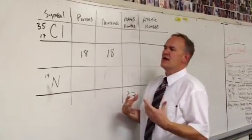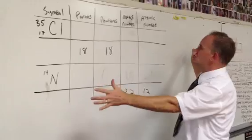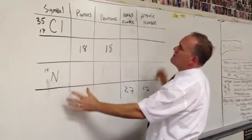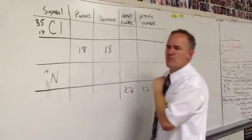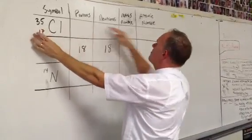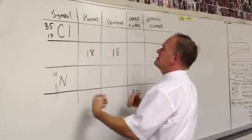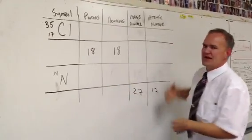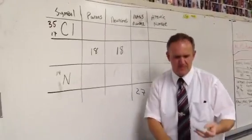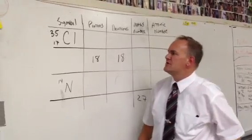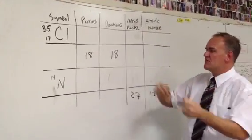Today's homework is going to involve something like this. We're going to have a big long chart, and the chart is going to have all this stuff on it. Each row is going to be about a particular isotope of an element. We've got to fill in the blanks — it's like a big puzzle. We're going to do a few examples, then I'll release you to do your own.